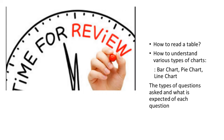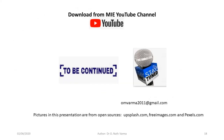We have now reached the end of this lesson. Let us recapitulate: we looked at how to read a table, how to understand various types of charts — bar chart, pie chart, and line chart — and we looked at the types of questions asked and what is expected for each. In the next lesson we will wind up on this chapter on research methodology. It was nice talking to you. We will see you very soon — for today, goodbye.